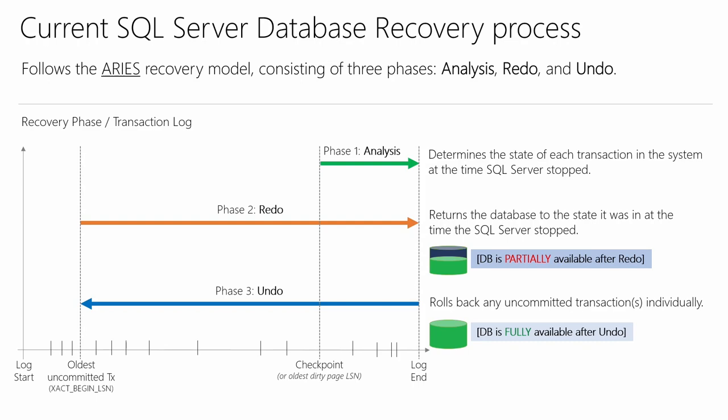Then phase three is undo, where you undo any transactions that weren't committed before the time you're rolling forward to. At the time the redo finishes, the database is partially available — meaning you can access the database, but any data that was under lock from the original transactions will still be under lock. So even though nobody is doing them, you can't access that data until undo completes. This is a long-running process, and only after phase three can I start doing everything I want with the database again.